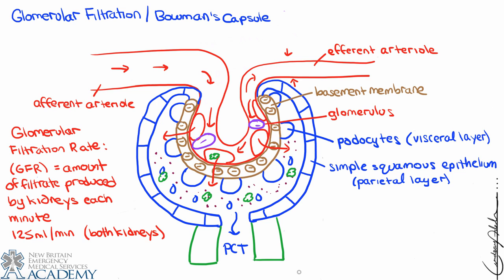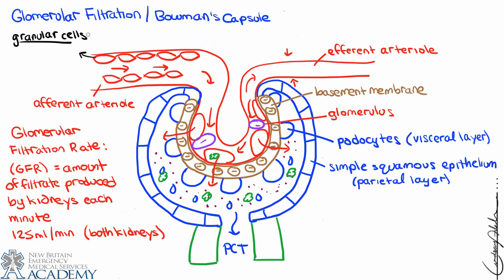Everything able to pass into Bowman's capsule next moves into the proximal convoluted tubule, where we can focus on the two processes of reabsorption and secretion — which will be described in the next video. One of the most important things about filtration at Bowman's capsule is the maintenance of homeostasis, particularly regulation of the fluid composition and volume of the blood.